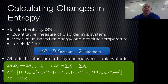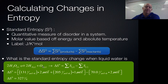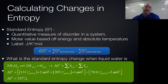Increasing entropy is good for spontaneity, so this predicts the reaction should be spontaneous — that water should just break apart into hydrogen and oxygen. But we know in practice that doesn't happen. So even though entropy increases, something else must be blocking it. Enthalpy must be saying 'don't be spontaneous,' and it must be a bigger factor than entropy in this case.